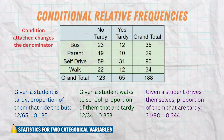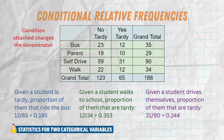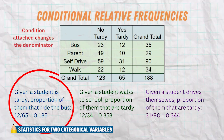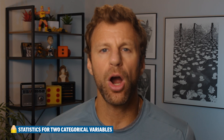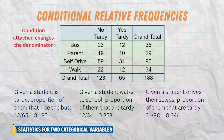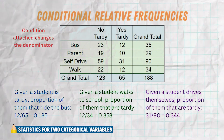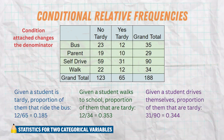Lastly, we have conditional relative frequencies. These are a little bit more confusing, but once you get the hang of it, it's really simple. The idea is there's a condition attached, and that condition changes the value in the denominator. For example, given a student is tardy, what proportion of them ride the bus to school? The condition is that it's given they were tardy — so our denominator is only limited to kids that were tardy. We take how many rode the bus to school and were tardy and divide it by the total that were tardy.